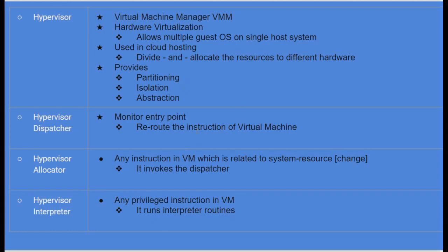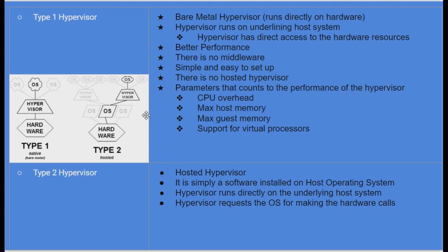Type 1 hypervisor is called a bare metal hypervisor. It runs directly on hardware, not on top of an operating system. It has direct access to hardware resources, giving it better performance with no middleware. It is simple and easy to set up with no hosted hypervisor layer. Key parameters to evaluate a hypervisor include CPU overhead, maximum host memory used, maximum guest memory used, and support for virtual processors.